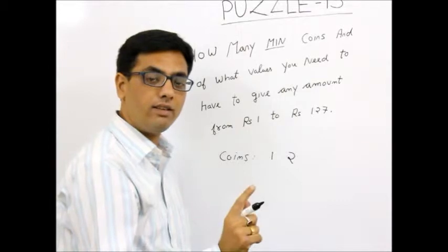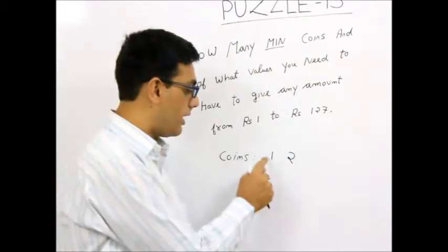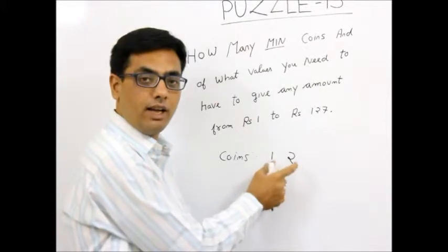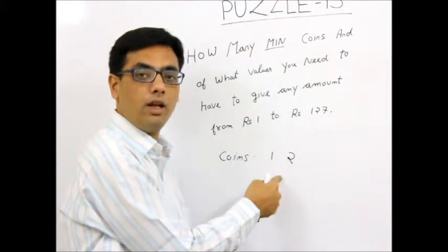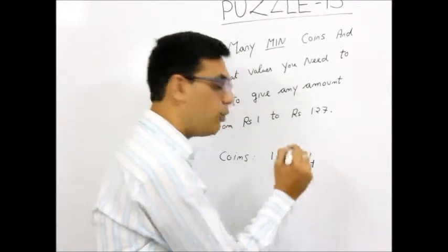Now the point is, if someone comes and says 3 rupees, I don't need a 3 rupee coin because I can give 1 plus 2, 3. I can give the exact amount in addition of that. So I don't need a 3 rupee coin. But by the same logic, I would need a 4 rupee coin.